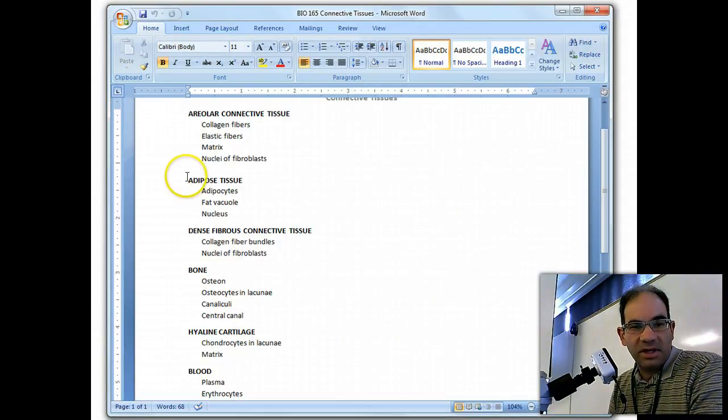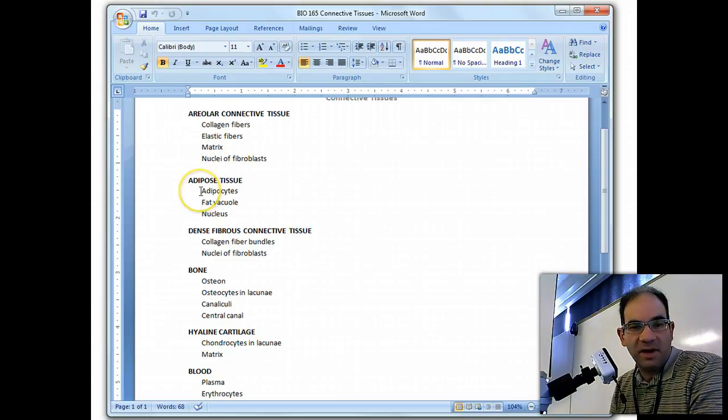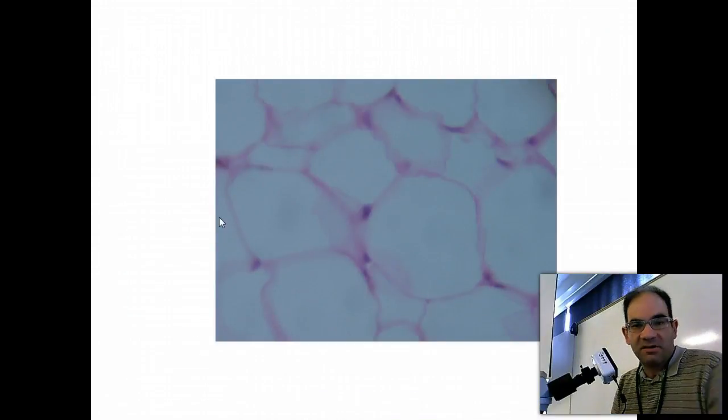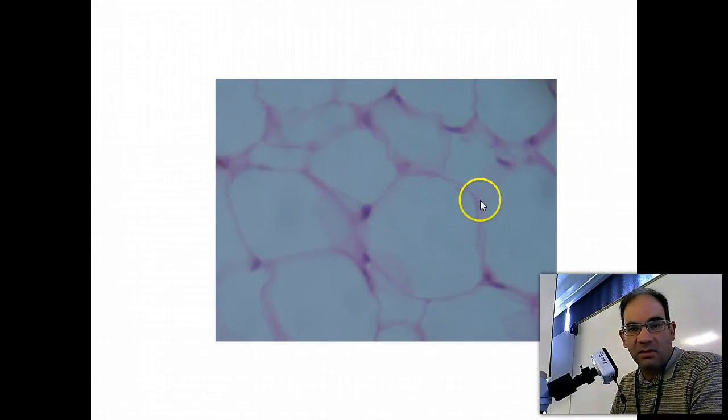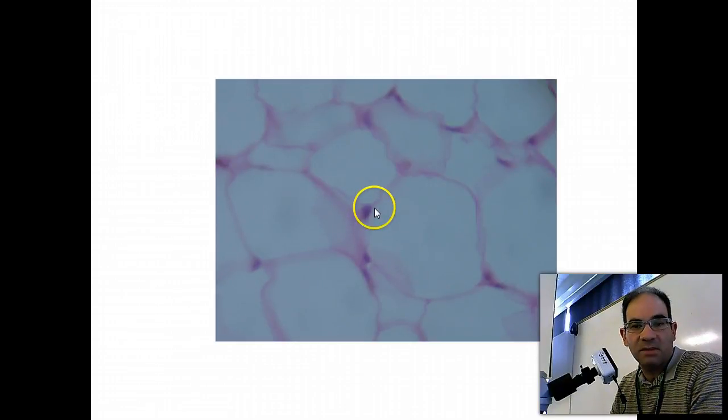Next, we'll look at adipose tissue, which is our next tissue type. And you're responsible for adipocyte, fat vacuole, and nucleus. So I've got some adipose tissue here at 400x, and this outline right here is the individual cell. This is the adipocyte. And everything in the middle of the cell is the fat vacuole. And then the dark staining structure, which is always pushed up against the edge of the cell or the cell membrane, that's your nuclei of the adipocyte. So there's your adipose tissue.